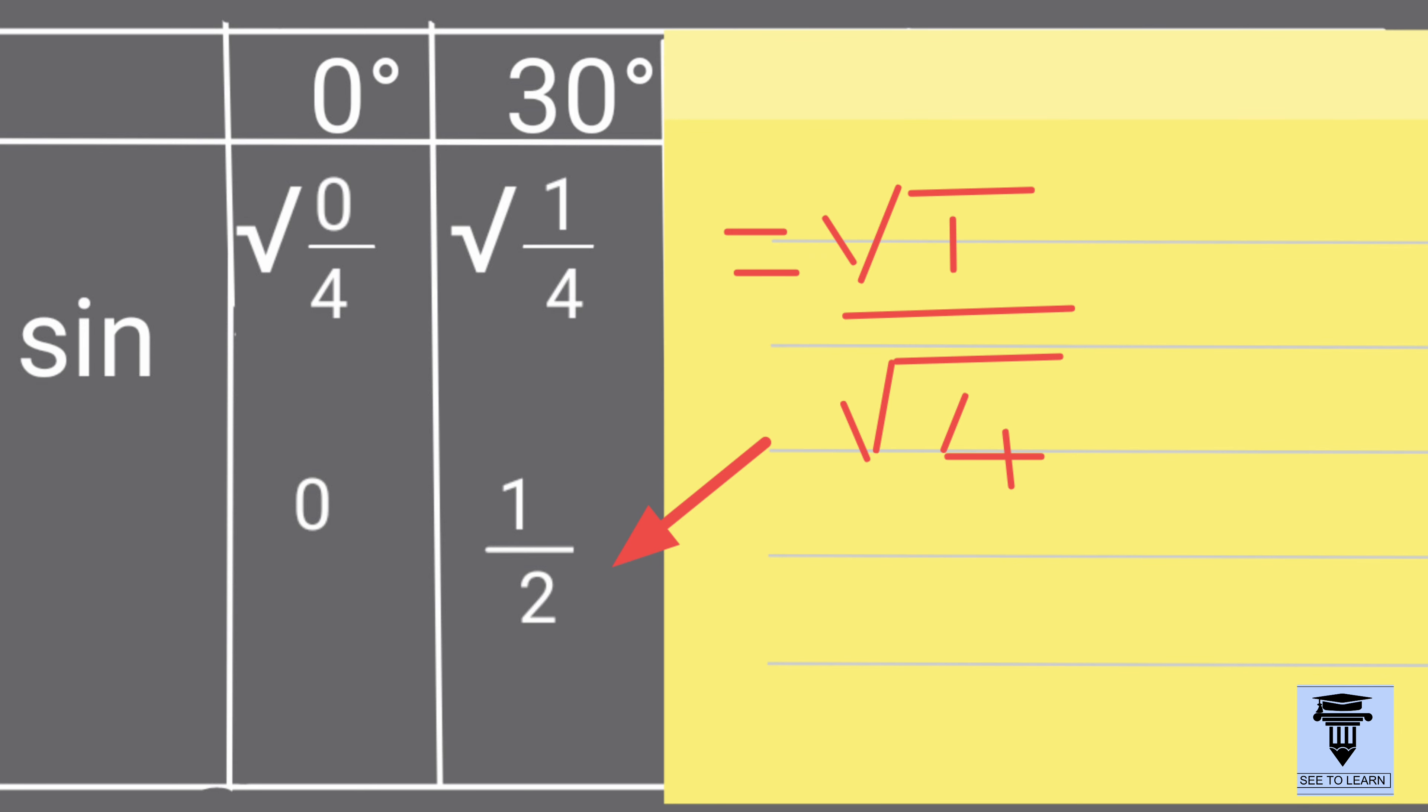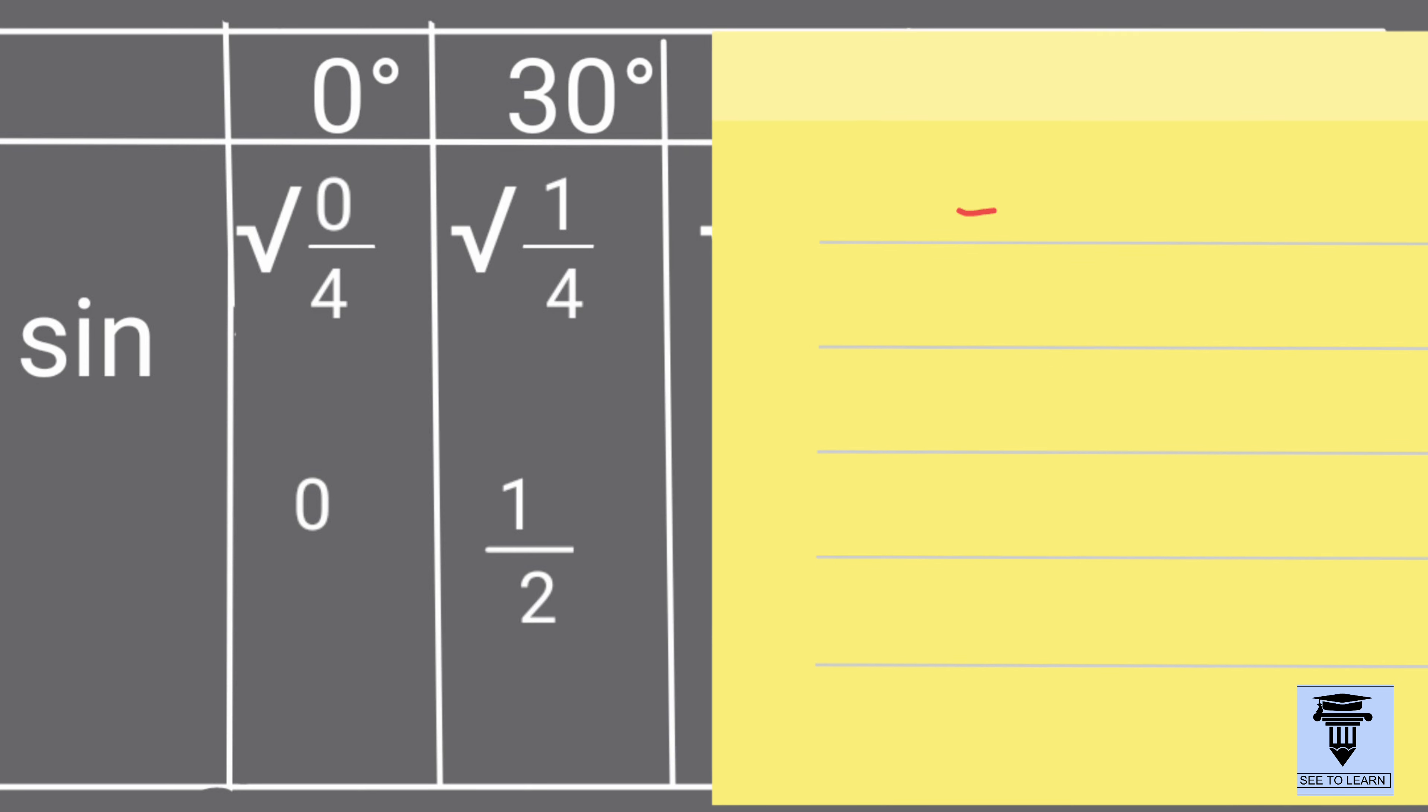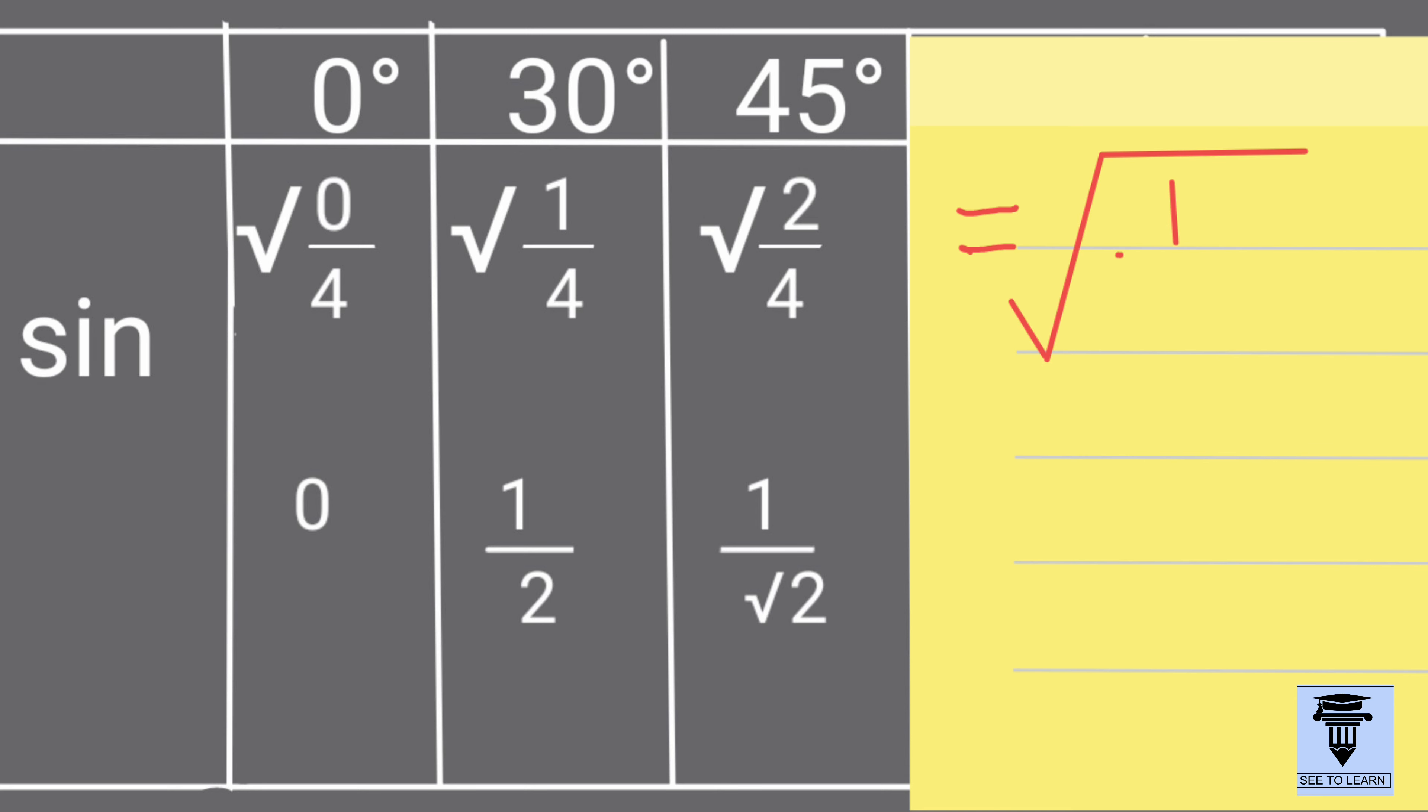So, it is 1 half. For sin 45, 2 by 4 is equal to 1 half and its square root is 1 by root 2.